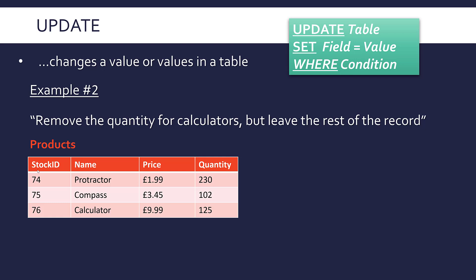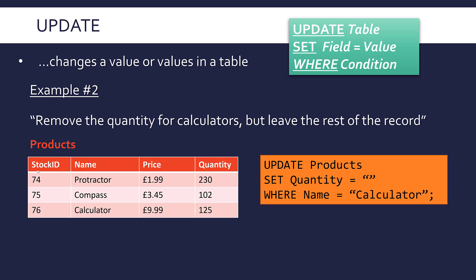Another example people often ask about: DELETE in the last video got rid of a whole row, but if you want to delete just one value you'd use UPDATE. So if I want to remove the quantity for calculators but leave the rest of the record alone, I'd use UPDATE products WHERE name is 'calculator', then SET quantity to an empty string. That stores an empty string, but it's effectively how you delete a single piece of data within a record.